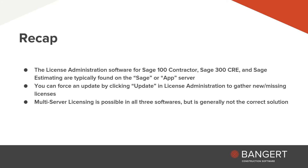To recap: if you need to access license administration, you'll open that on your Sage server — typically named the Sage or app server. You can force an update by clicking Update, which might gather new or missing licenses. You could also try forcing things by clicking Deauthorize and then Update. Multi-server licensing is possible in all three — Sage 100 Contractor, Sage 300 Construction and Real Estate, and Sage Estimating — but it's almost never the correct solution, so you should reach out to us to discuss before you attempt. Thanks very much for watching.